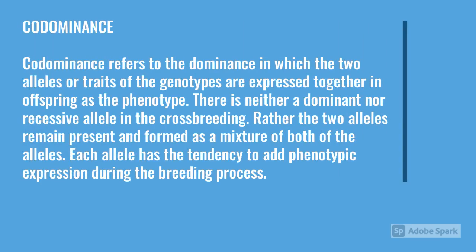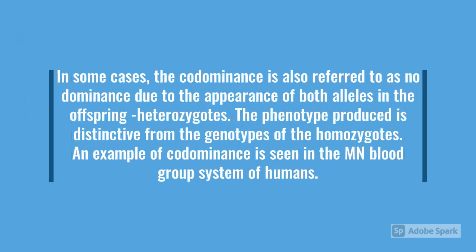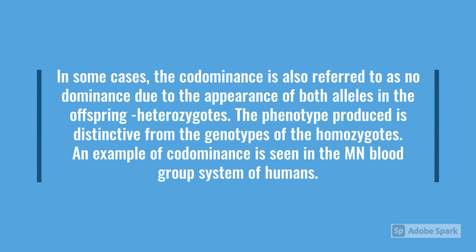Codominance refers to a type of dominance in which the two alleles or traits of the genotype are expressed together in the offspring. There is neither a dominant nor a recessive allele; rather, the two alleles remain present and form a mixture of both. Each of the alleles has the tendency to add phenotypic expression during the breeding process. In some cases, codominance is referred to as no dominance due to the appearance of both alleles in the offspring, and the phenotype produced is distinctive from the genotype of the homozygotes.